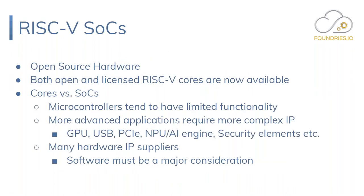The benefit of RISC-V is that it's open source hardware — there is no license needed to get access to the RTL or the design of the core. Looking at the RISC-V Foundation website, a number of cores are already available. Some are completely open source and downloadable on GitHub; some are licensed from companies like SiFive; and some companies have a combination of open source and licensed.